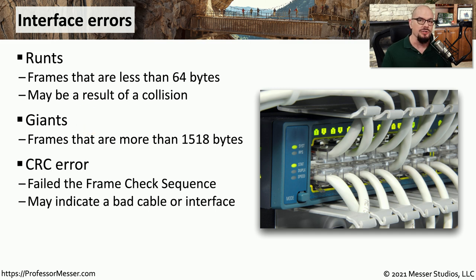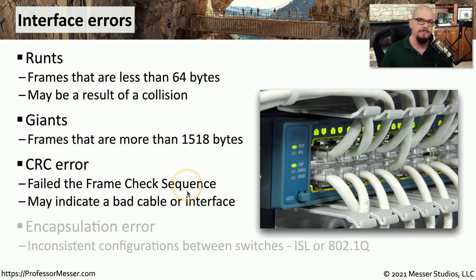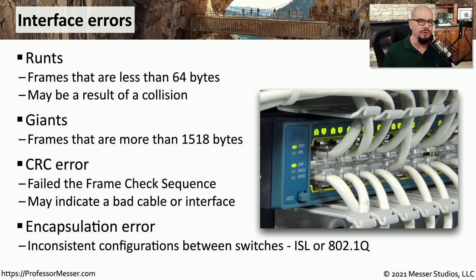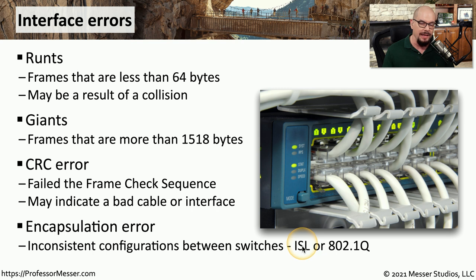If any Ethernet signals are corrupted as they're sent across the network, you may receive a cyclic redundancy check error, or CRC error — also referred to as a frame check sequence error, or FCS error. These are commonly caused by a bad cable or bad interface, and resolving the cable or interface causes the CRC errors to cease. There may also be encapsulation errors, where one switch is expecting one type of frame and the other switch is expecting a different type. On older switches, you may see trunk links using Inter-Switch Link protocol, or ISL. These days we tend to use the 802.1Q standard, but if one side is set for ISL and the other is set for 802.1Q, you'll have an encapsulation error.